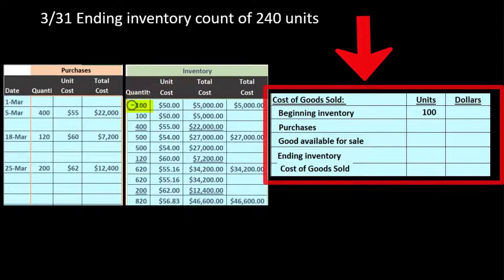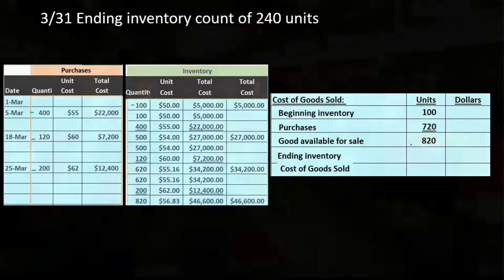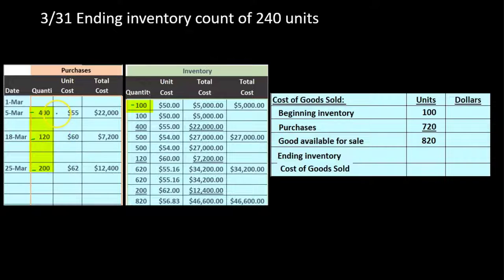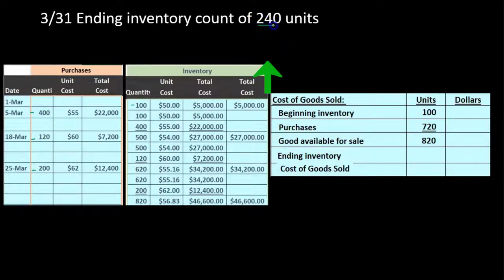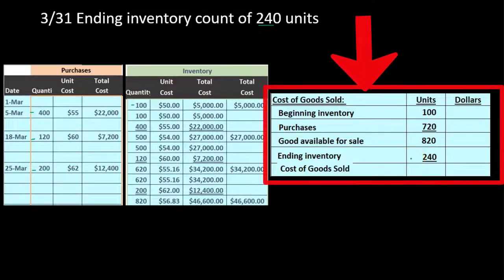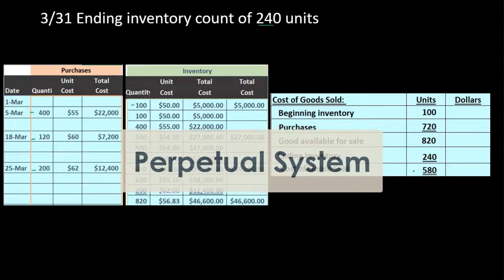Working through the units: we started with 100 units and purchased 720 units (400 + 120 + 200), giving 820 goods available for sale. That doesn't mean we had 820 at any single moment — it means 820 passed through our warehouse. Then we do the physical count and find 240 widgets remaining. So 820 − 240 = 580 units sold. It's possible some were lost to shrinkage or theft, which is one advantage of a perpetual system.